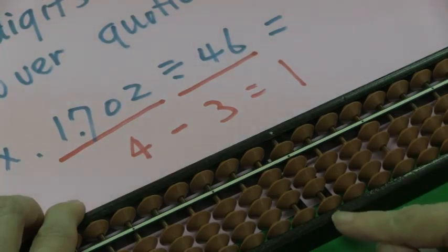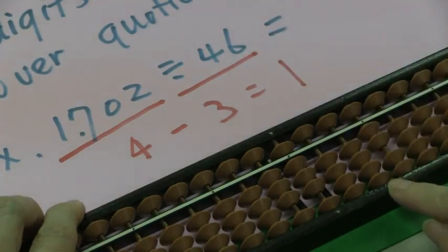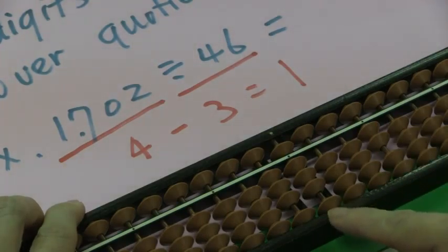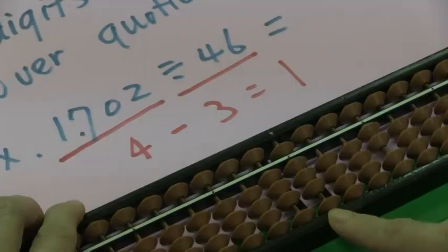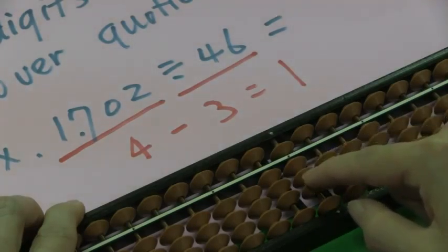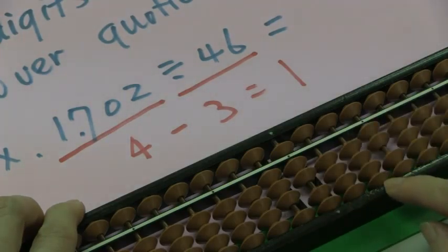But we still need to do the next, 8 times 6 is 48. Here, the remainder is not enough. It's over-quotient again. The quotient is too big. We need to reduce the quotient one time and add it back to the remainder.